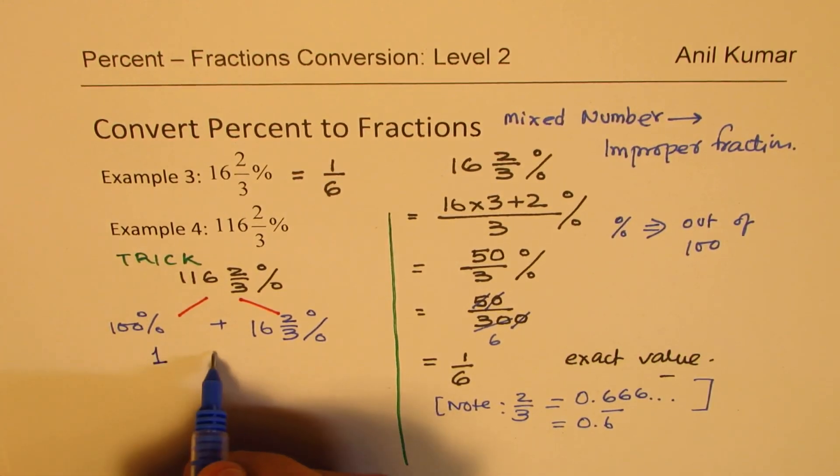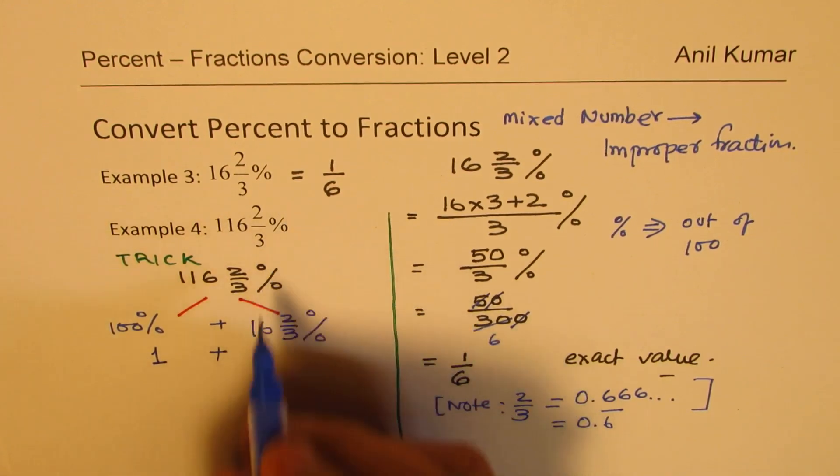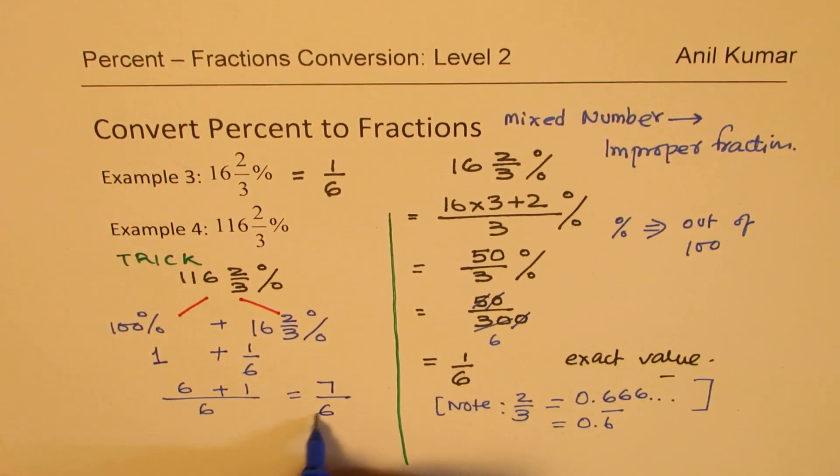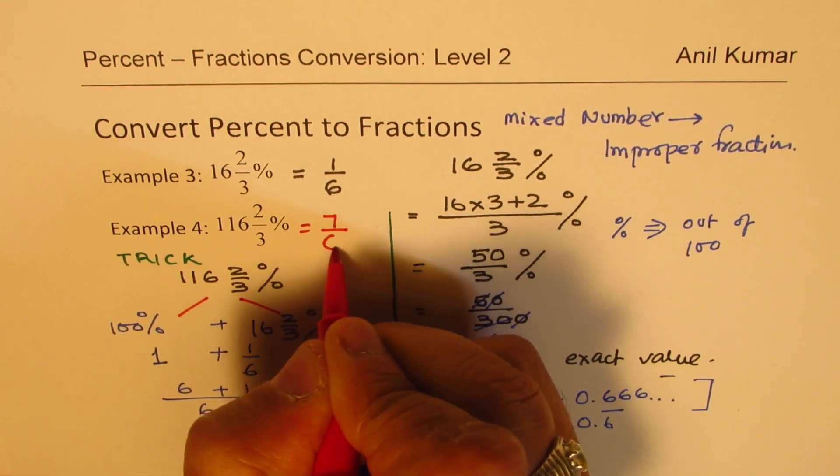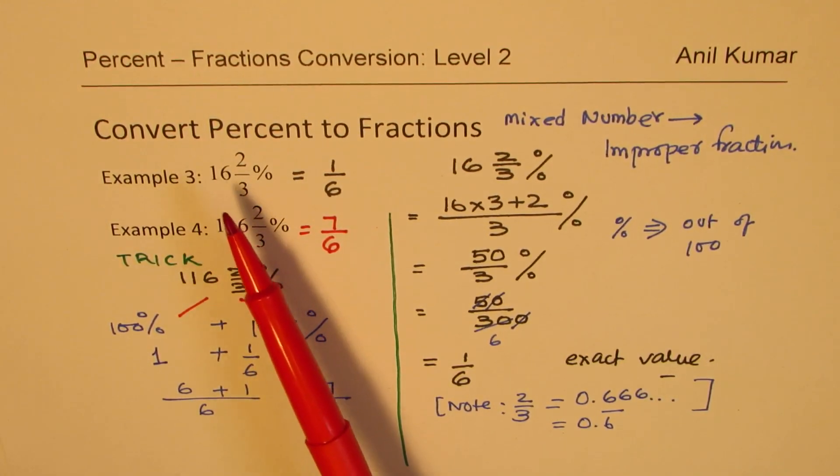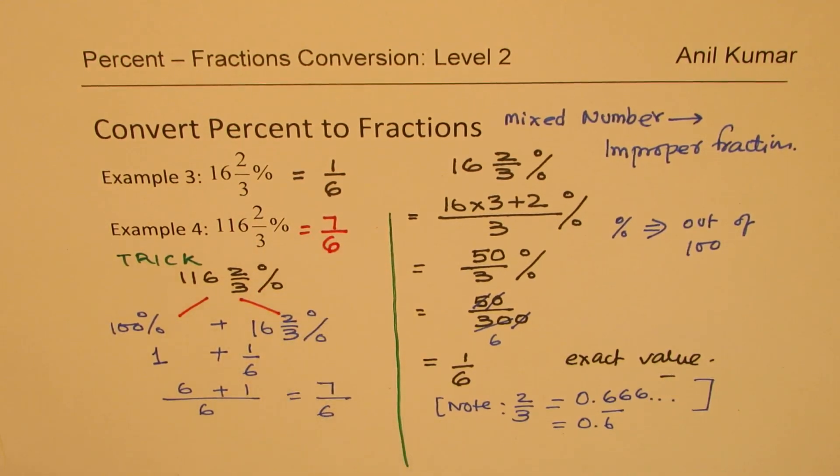Now 100 percent in fraction is what? It is 1. 100 percent means 1. 16 2/3 is 1 over 6. So when I add them with a common denominator of 6, I get 6 plus 1 equals to 7 over 6. So I could write this as 7 over 6. Does it make sense to you? Now what I am trying to emphasize here, in fractions, if you know all equivalent for same denominators, you can actually get your number very fast. Does it make sense to you? So that is how we could actually work with these examples. Perfect.